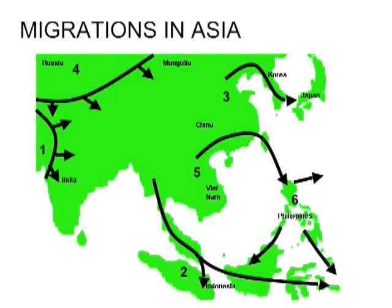A fourth distribution involves wave after wave of people coming out of the Russian steppe. The classic example is Mongol hordes invading China — this happened time and again, and in fact the Chinese built the Great Wall of China to defend themselves. Fifth, we have people moving out of southern China into Taiwan, with the most recent being Mandarin-speaking Chinese, but earlier inhabitants spoke Austronesian languages. These people subsequently moved out of Taiwan through the Philippines and out into the Pacific Islands and Indonesia, and these are the same people who ultimately went to Madagascar.